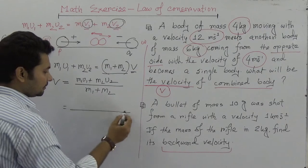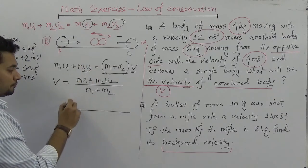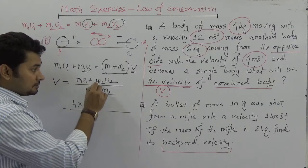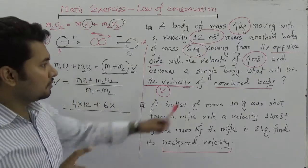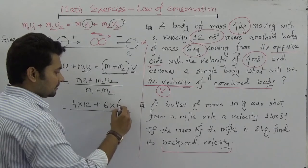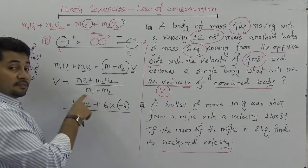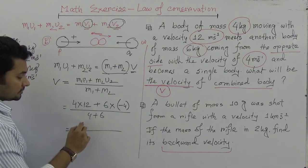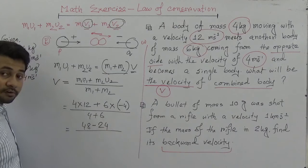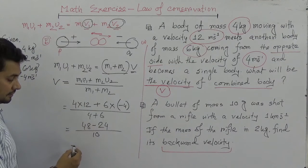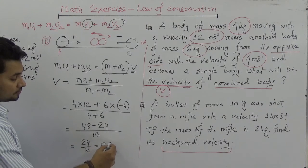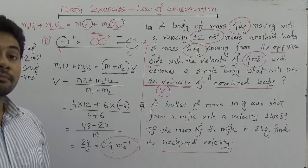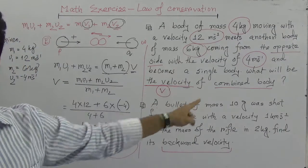V is equal to M1U1 plus M2U2 divided by M1 plus M2. Putting in the data: M1 is 4 kg times U1 is 12, plus M2 is 6 kg times minus 4 meters per second, all divided by 4 kg plus 6 kg. This gives 48 minus 24 over 10, which equals 2.4 meters per second. Most interestingly, we found the magnitude of the velocity of the combined body is positive.